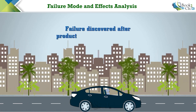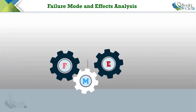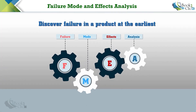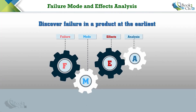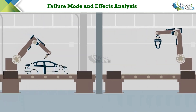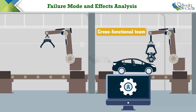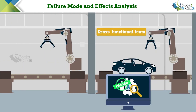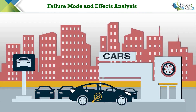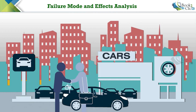If a failure is discovered late in product development or a launch, the impact will be very high and devastating. FMEA is one of the tools used to discover failure in a product at its earliest possible point. It is an engineering analysis done by a cross-functional team of experts who thoroughly analyze the product design and manufacturing processes early in the product development process. Its objective is to find and correct the product's weaknesses before getting to the customer.